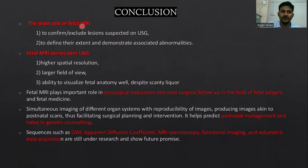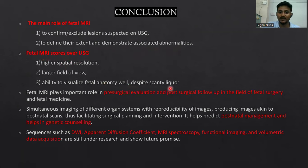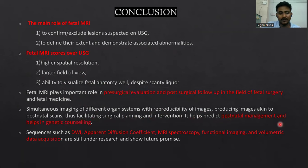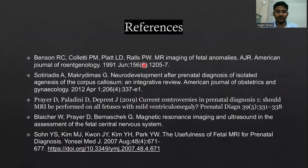To conclude, the main role of fetal MRI is to confirm and exclude lesions suspected on USG, to define extent, and to demonstrate associated abnormalities. Fetal MRI scores over USG due to its higher spatial resolution, larger field of view, and ability to visualize fetal anatomy despite unfavorable conditions. MRI plays an important role in pre-surgical evaluation and post-surgical follow-up in fetal surgery, simultaneous imaging of different organs, and reproducibility of images. This facilitates surgical planning and intervention, helps predict postnatal management, and assists in genetic counseling. Other sequences including DWI, ADC, MR spectroscopy, functional imaging, and volumetric data acquisition are still under research and showing future promise.